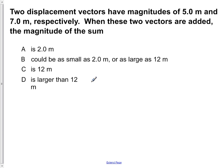Two displacement vectors have magnitudes of 5 meters and 7 meters, respectively. When these two vectors are added, the magnitude of the sum: